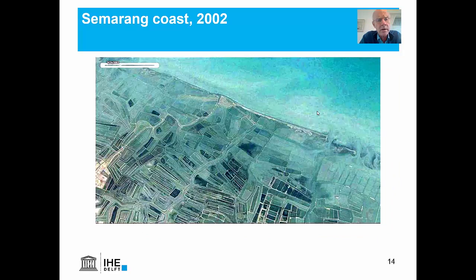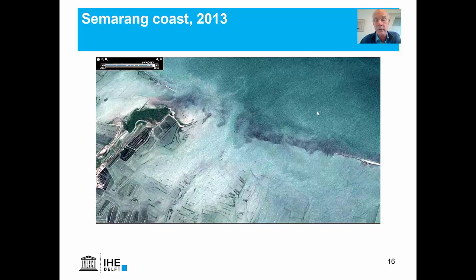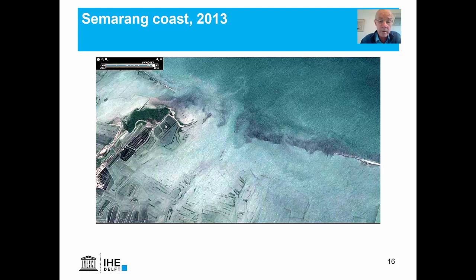We are not just concerned with sandy coasts, but we also look more and more into muddy coasts and mangrove coasts. Here's what happens if you take away the mangrove belt and develop fish ponds everywhere. This is the coast of Samarang in 2002, this is in 2008, and this is in 2013. If you take away the natural defenses that keep the sediment in place and protect against waves, then you can have erosion of kilometers. You can see that in this area there's already a new mangrove belt growing naturally, and efforts are underway to see if this area can be restored.